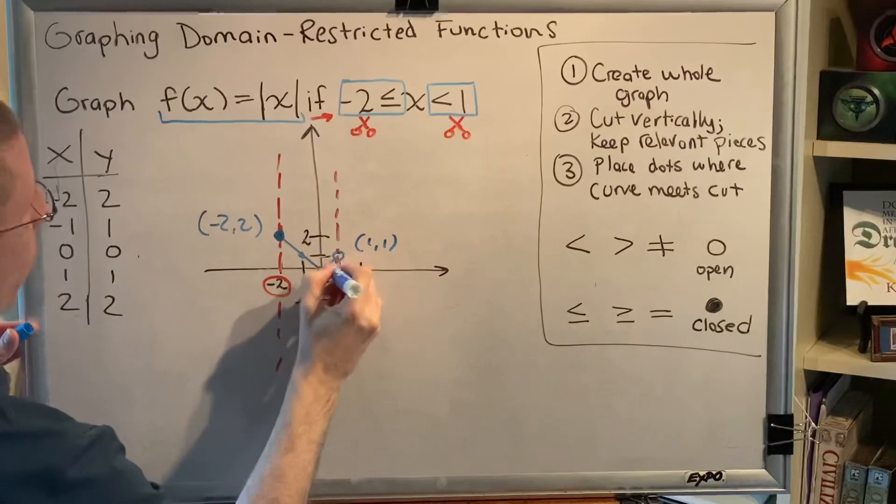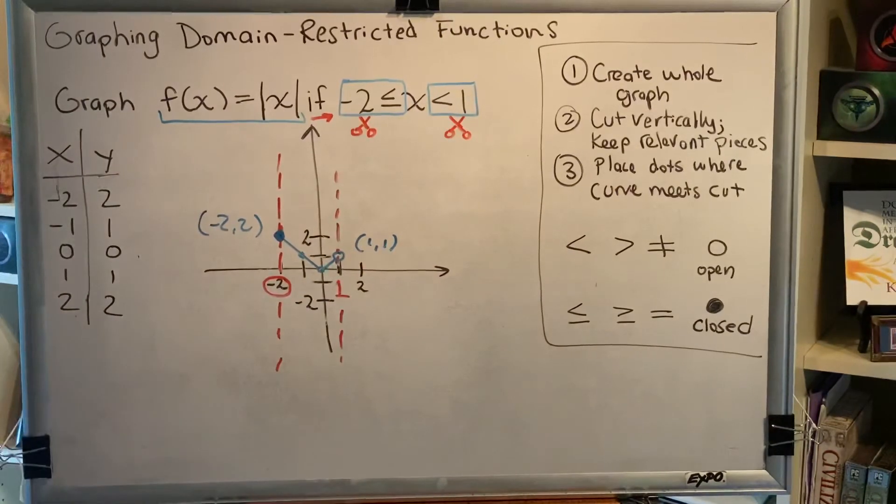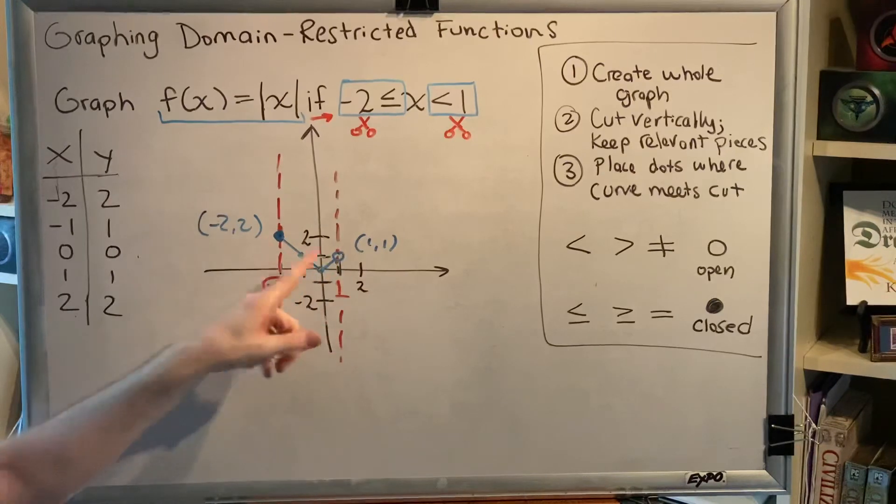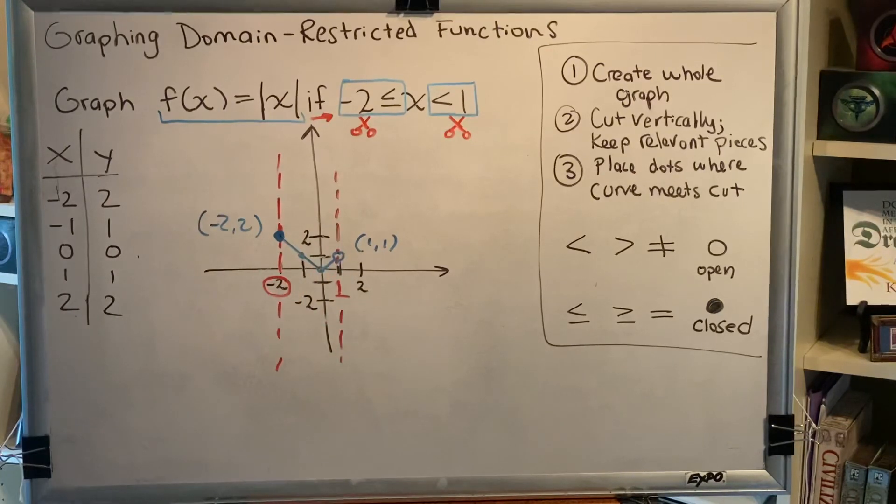All right. With that, we are now done with our graph. We have said that we want the absolute value graph, but the only part we want to keep is in between negative 2 and 1, including negative 2, but excluding 1.